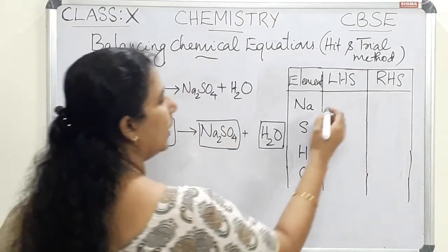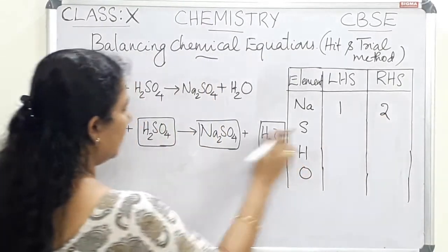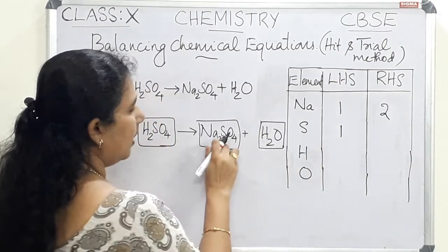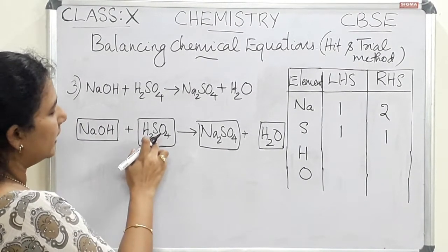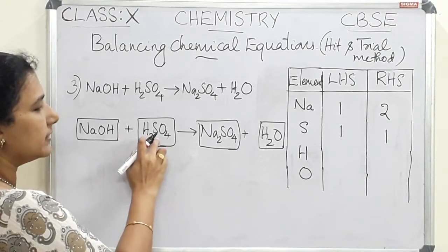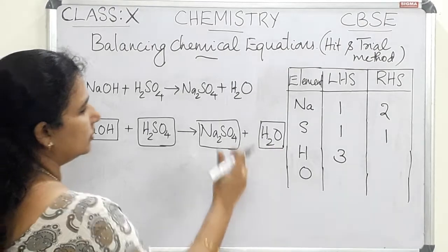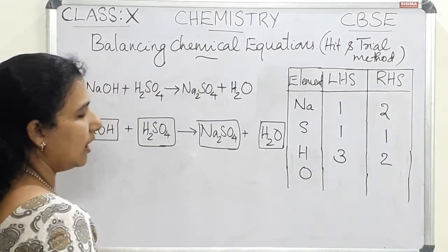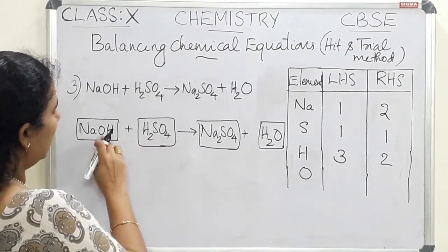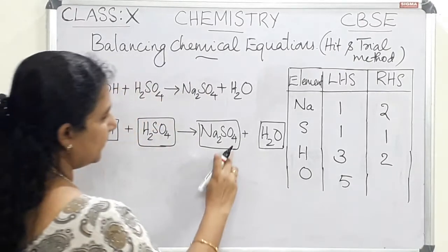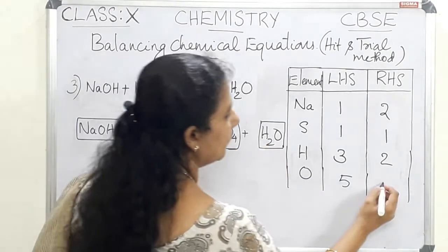Counting atoms: sodium has one atom in the LHS and two in the RHS. Sulfur has one atom on each side. Hydrogen: NaOH contributes one hydrogen and H₂SO₄ contributes two, giving three total in the LHS; the RHS has two. Oxygen: NaOH contributes one and H₂SO₄ contributes four, giving five total in the LHS; the RHS has only one oxygen atom.